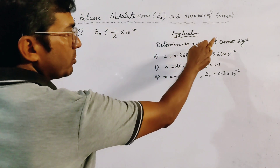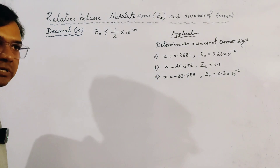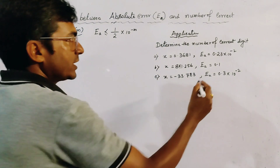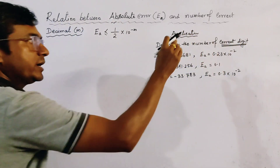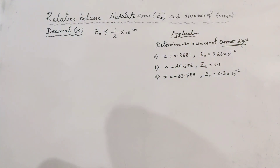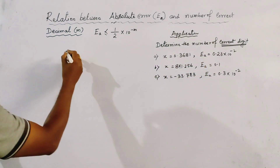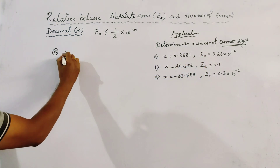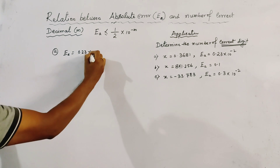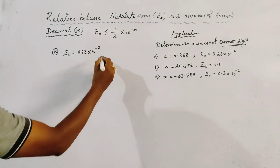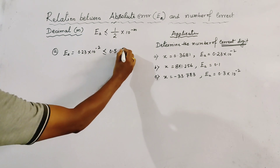We need to determine the number of correct digits — specifically, the number of correct significant digits. Three applications are given. Here we apply this formula. For case (a), the absolute error ea is equal to 0.23 × 10^(-2).